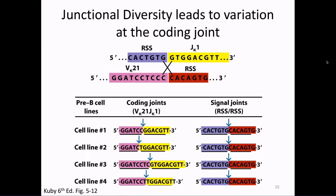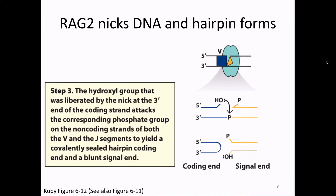The signal joints always ligate together to give exactly the same product with no variation. But things get wonky with the coding joint, and this wonkiness is related to the fact that we have made this DNA hairpin. Remember that to form the coding joint, the 3' hydroxyl on one strand performed a nucleophilic attack on the other strand. So we don't have just a normal piece of double-stranded DNA — we have this hairpin where one strand is actually connected to the other. The hairpin opening is the first place we get junctional diversity.